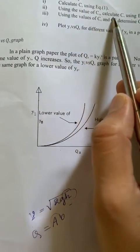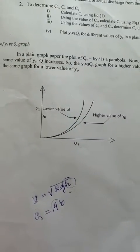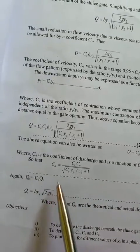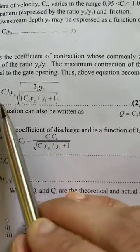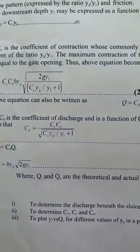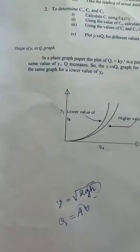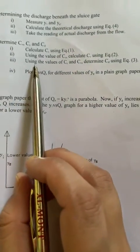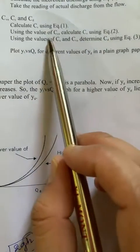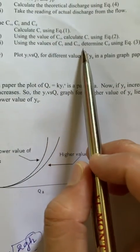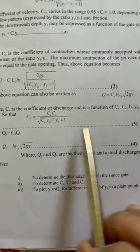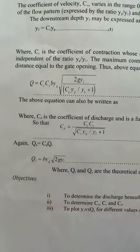Using this value of cc, we have to calculate cv using equation 2. After that, we have to find out the value of cd using the cv and cc values from equation 3: qa equal to cd·qt.